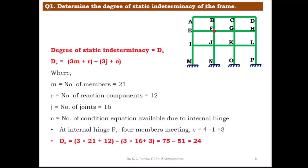Coming to the first example: determine the degree of static indeterminacy of the frame. This frame has an internal hinge present at joint F. Using the expression ds = 3m + r − 3j + c, where m is the number of members, r is the number of reaction components, j is the number of joints, and c is the number of condition equations due to the internal hinge.